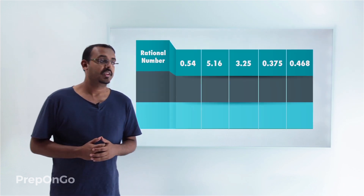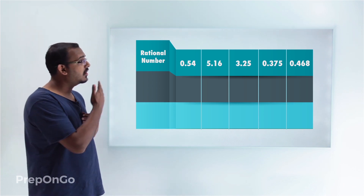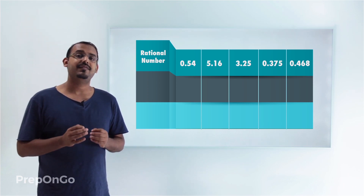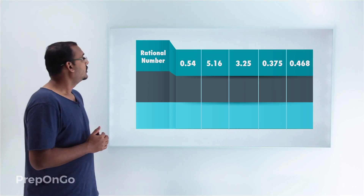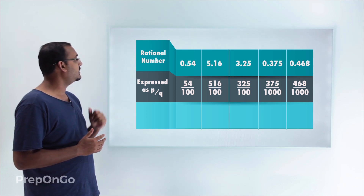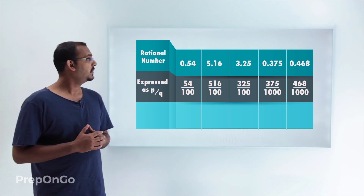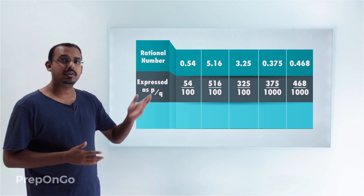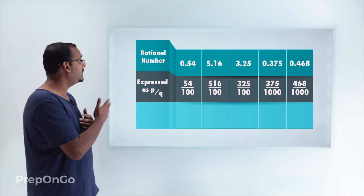To do that, let's take an example. We have some rational numbers, and these are all rational numbers which have terminating decimal expansions. We'll try to see if we can find some common relation which exists between these numbers. I can represent them in the form p/q: the first as 54 upon 100, the second as 516 upon 100, the third as 325 upon 100, the fourth as 375 upon 1000, and the fifth as 468 upon 1000.